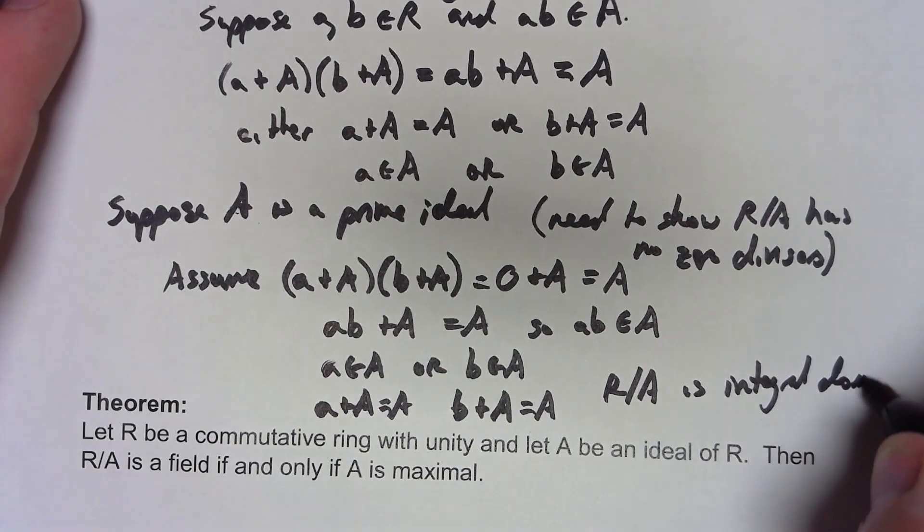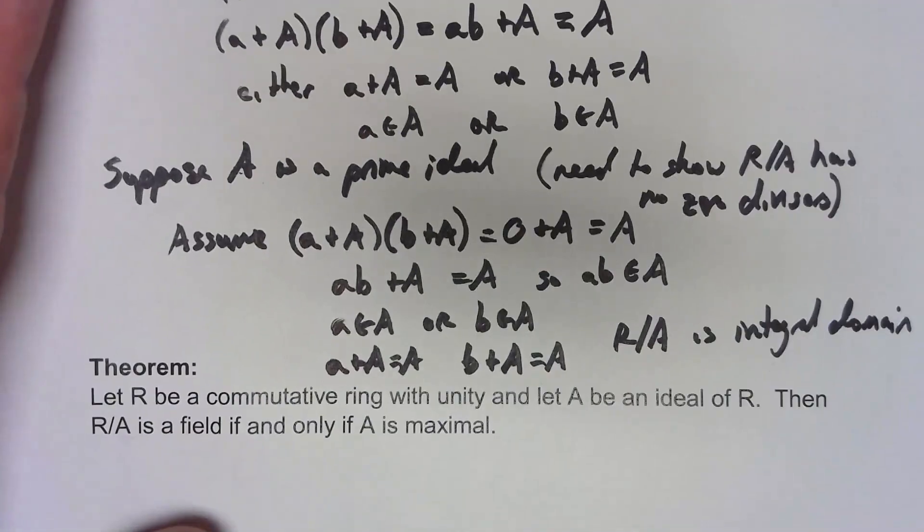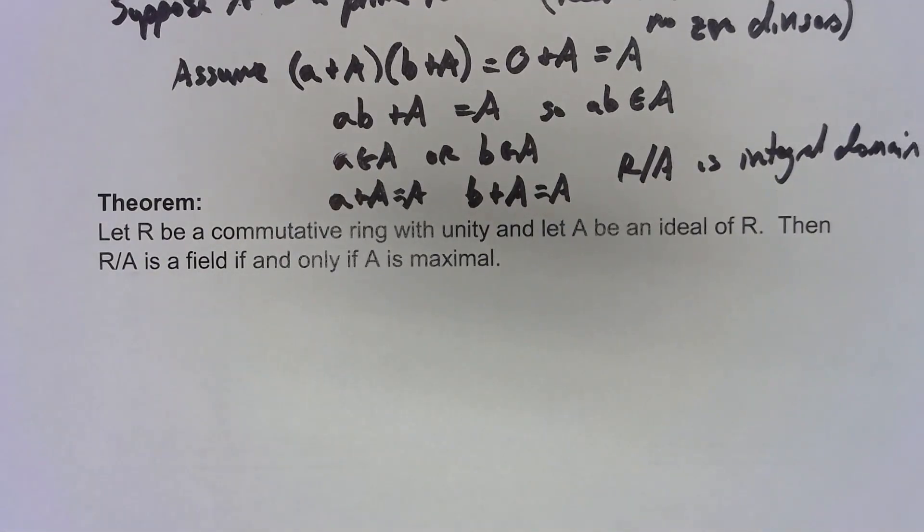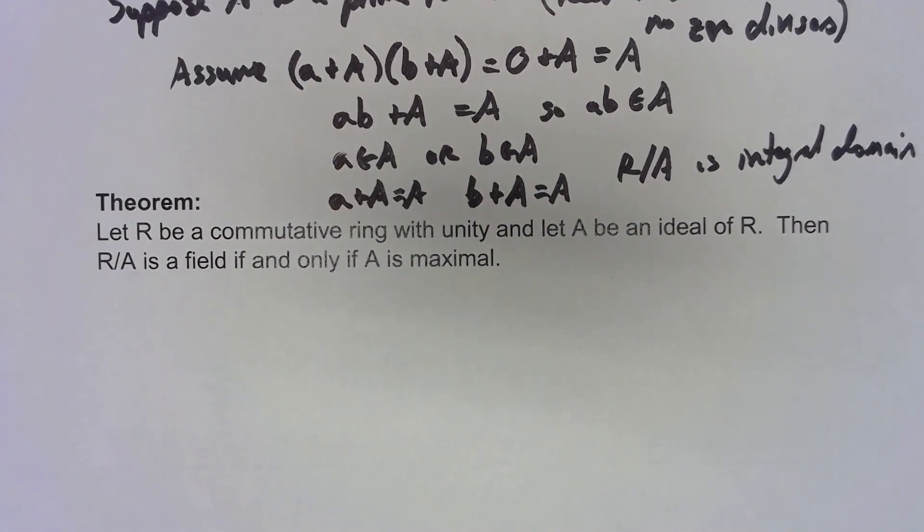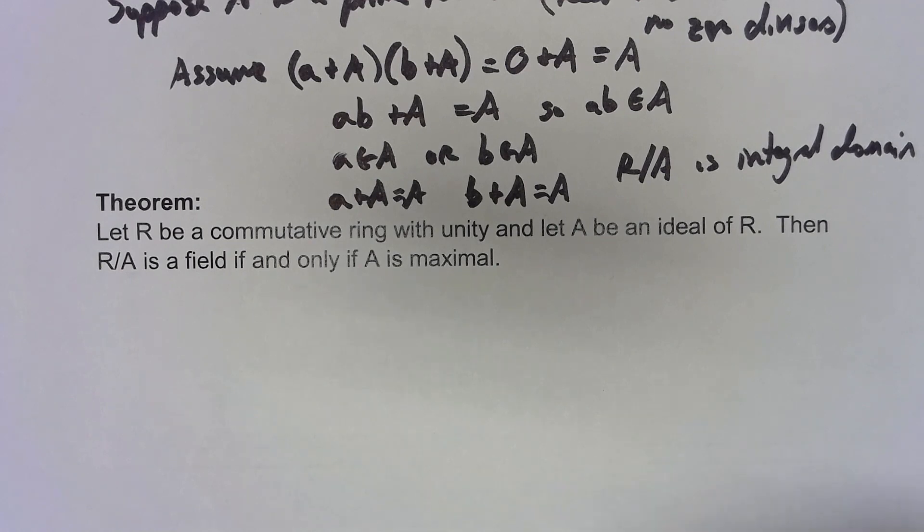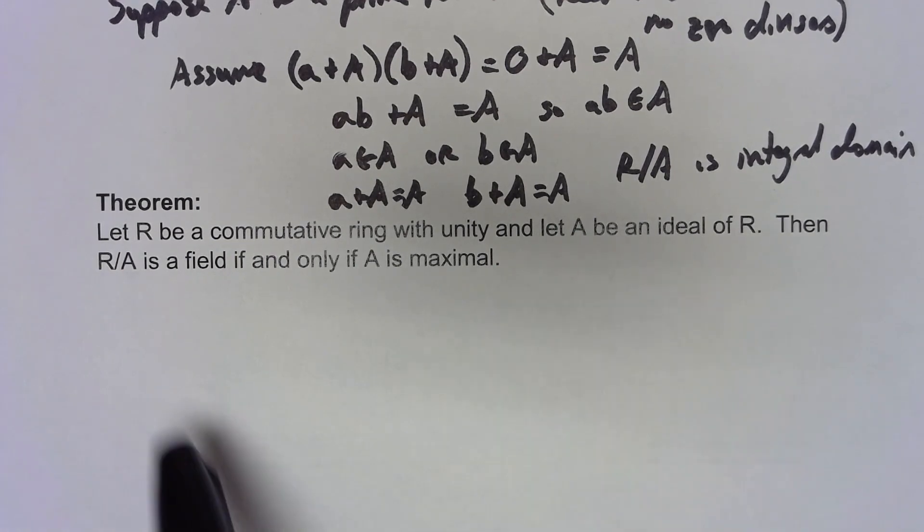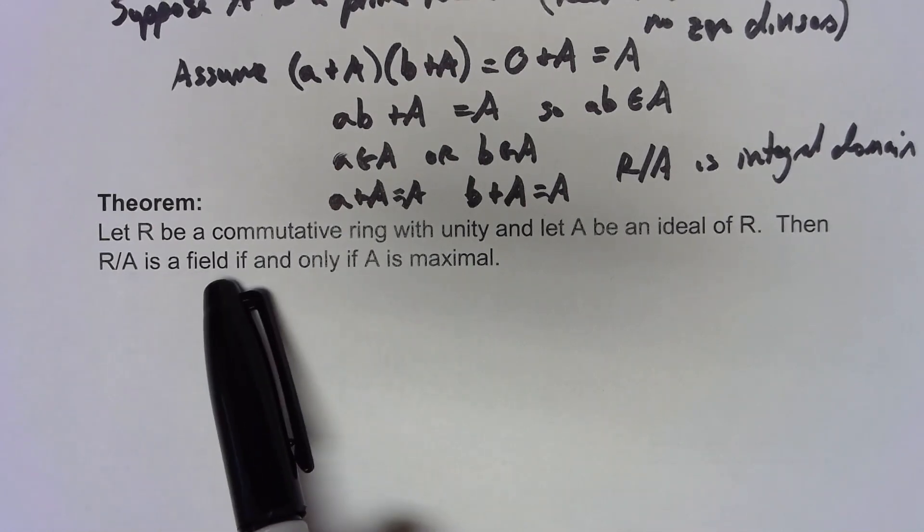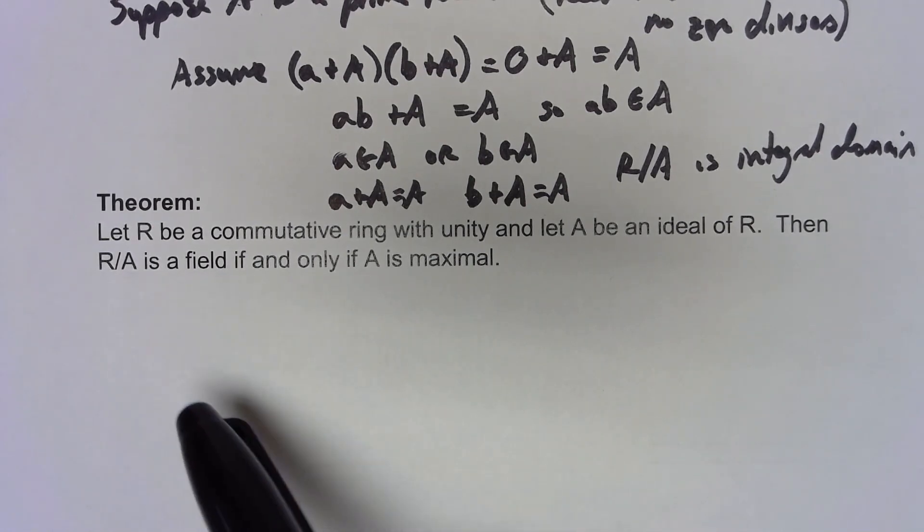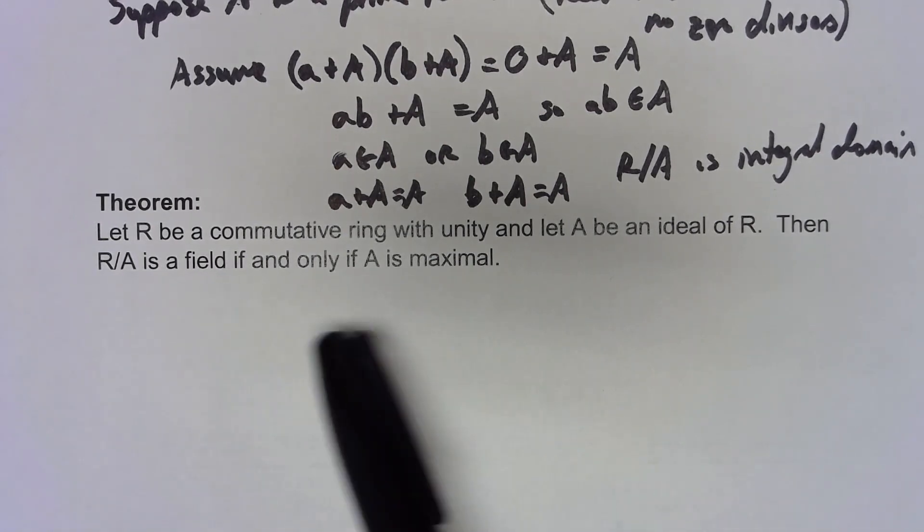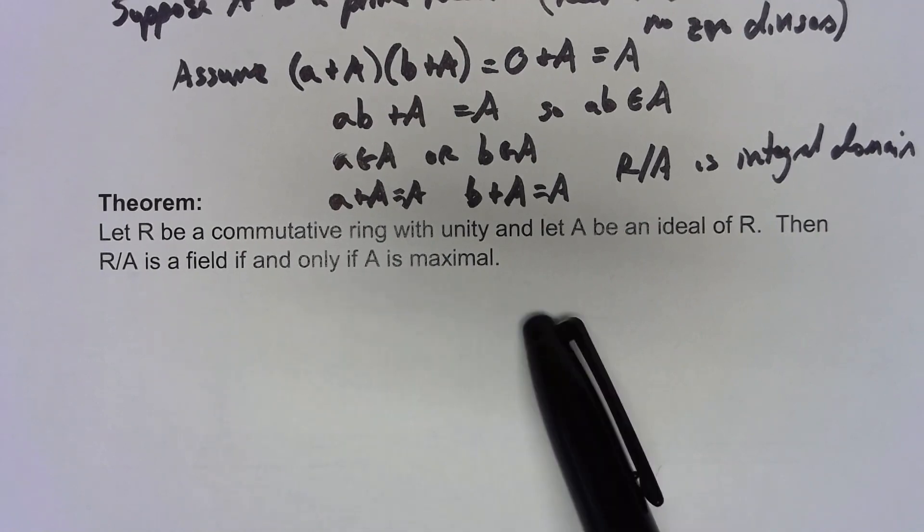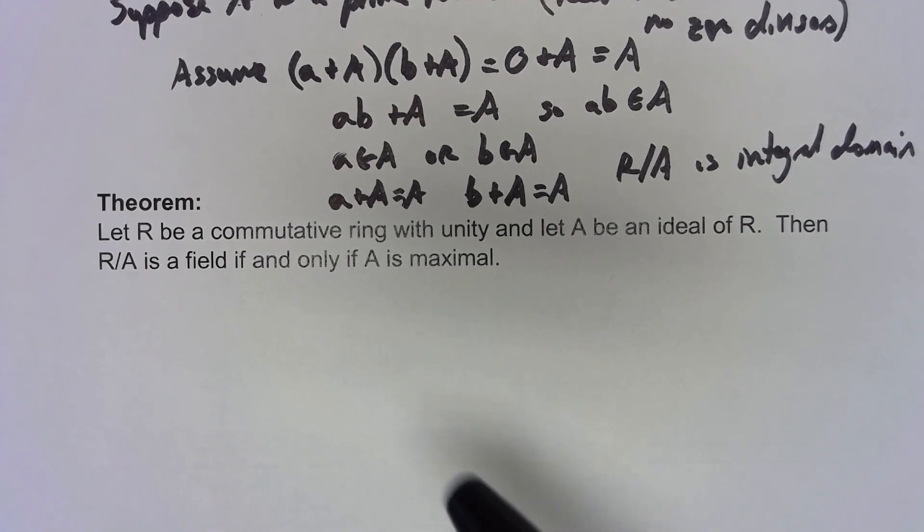We've got a similar thing if we have a maximal ideal. If we've got a commutative ring with unity and we've got an ideal, then the factor ring is a field (that is, it has multiplicative inverses) if and only if A is a maximal ideal. I'm not going to go through the proof for this one, but it's an important property to realize.